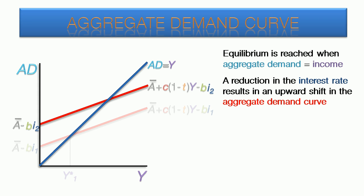A reduction in the interest rate results in an upward shift in the aggregate demand curve. This results in a higher equilibrium level of national income. So the interest rate went down, and the equilibrium income went up.